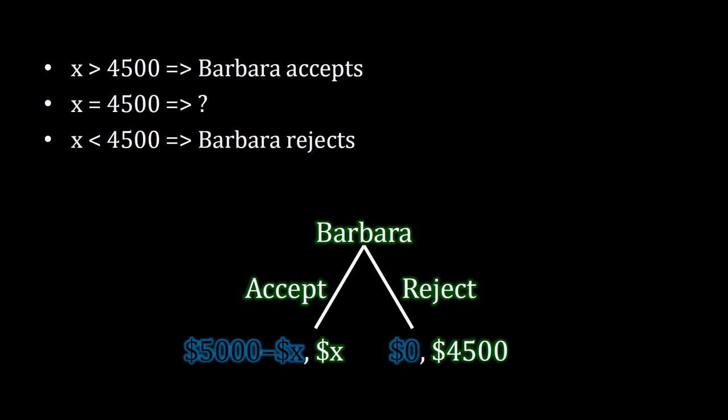So let's look at Barbara's decision from the bottom up. Barbara has a whole bunch of different situations — 5,001 different situations, because Albert can make 5,001 different offers. Barbara's decision depends on X. I've highlighted Barbara's payoffs here because she only needs to worry about her own payoffs. If X is greater than $4,500, comparing X on one side and $4,500 on the other, Barbara is going to accept that offer.